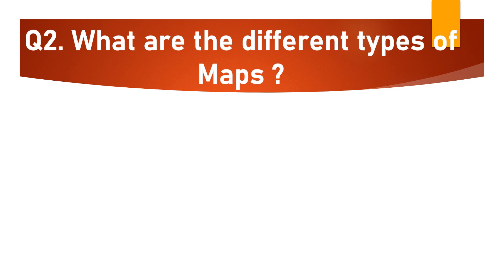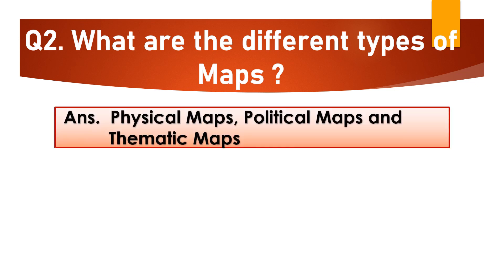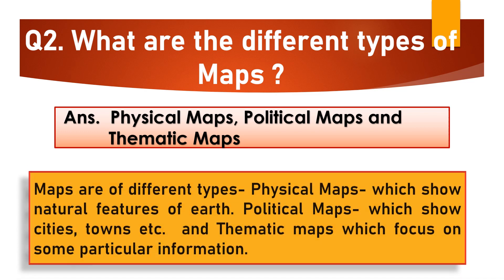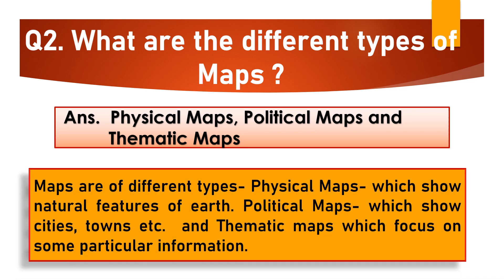Question No. 2: What are the different types of maps? The answer is Physical Maps, Political Maps and Thematic Maps. Physical Maps show natural features of the Earth. Political Maps show cities, towns, etc. And Thematic Maps focus on some particular information.